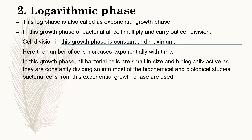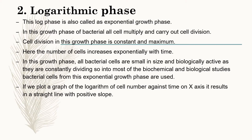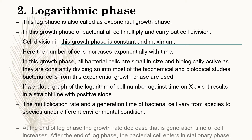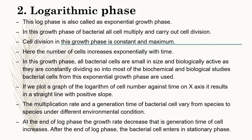The bacterial culture used in maximum biochemical and biological tests is from the logarithmic growth phase. If we plot a graph of logarithm of cell number against time on the x-axis, it results in a straight line with a positive slope. The multiplication rate and generation time of bacterial cells may vary from species to species under different environmental conditions. At the end of log phase, the growth rate decreases — that is, the rate of cell multiplication and division decreases and the generation time increases. The bacterial cell then enters the stationary phase.